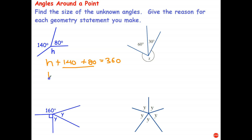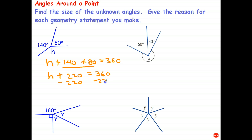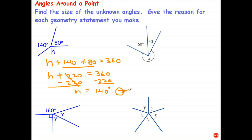Now I have to add the numbers together. 14 plus 8 is 22, so that's 220 equals 360. Subtract 220 from each side, and H equals 140 degrees. And the coded reason for that is angles around a point add to 360.